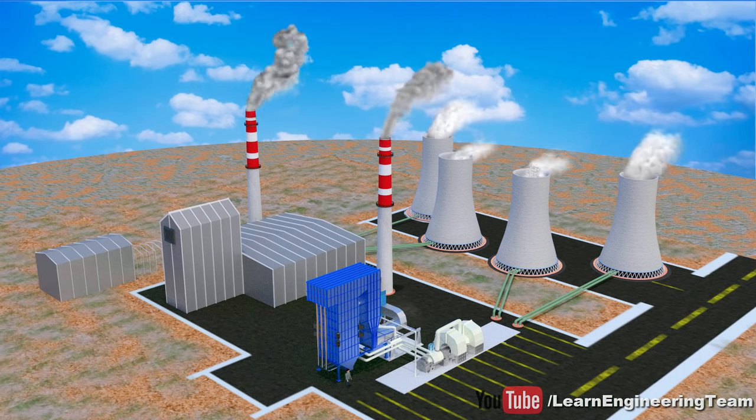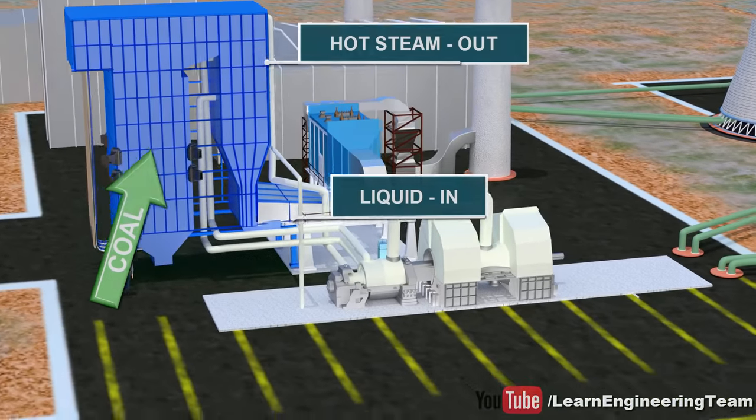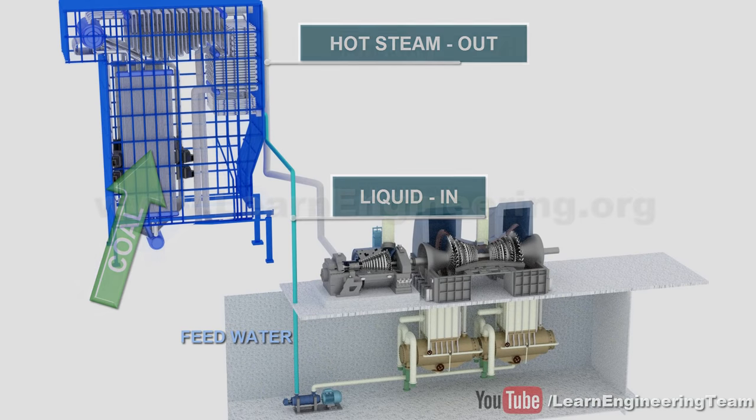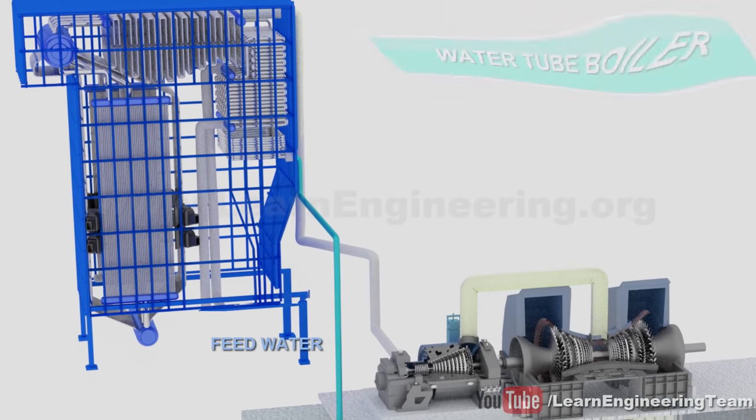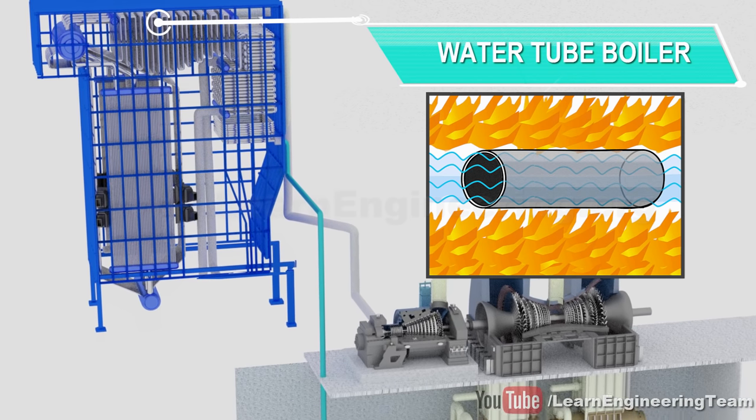The function of the boiler is to convert energy contained in the coal into high temperature steam. Large power plants typically use a type of boiler called a water tube boiler where water flows through the tubes and fire surrounds it. Water tube boilers are ideal for high-pressure applications.